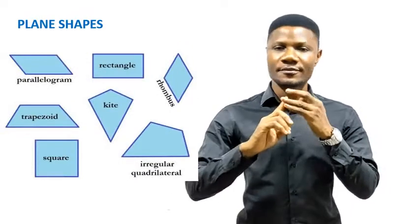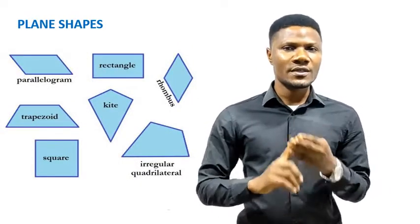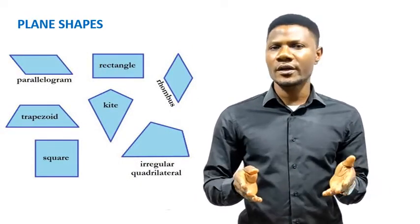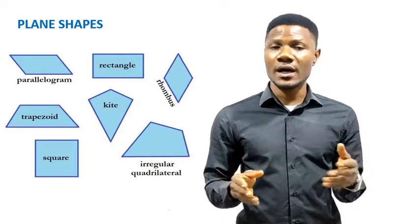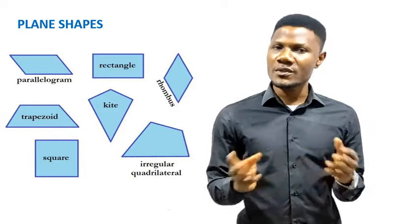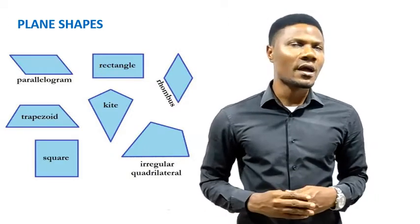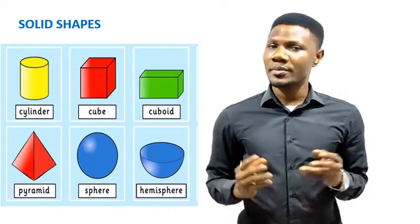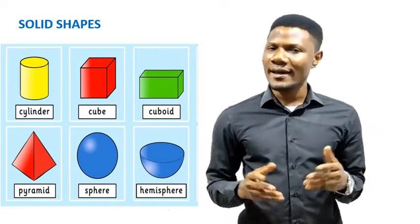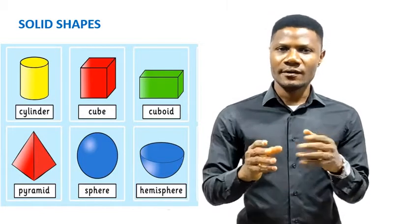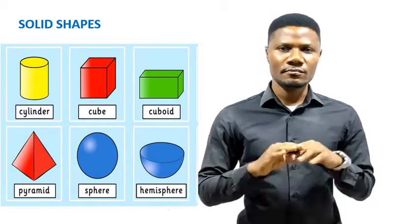For plain shapes we have square, rectangle, triangle, circle, parallelogram, rhombus, trapezium, and kites. But for solid shapes, we could have things like cube, cuboid, prism, cylinder, pyramid, sphere, etc. So now let's move into plain shapes.